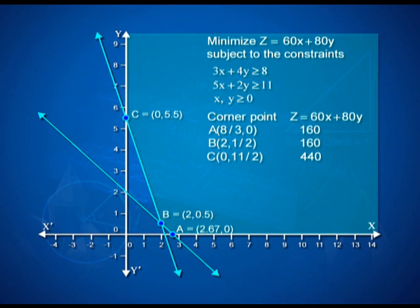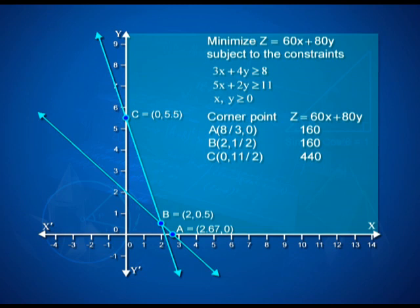The corner points are: A = (8/3, 0), B = (2, 1/2) or (2, 0.5), and C = (0, 11/2) or (0, 5.5). Evaluating the objective function at these three points, we observe that the value is 160 at both A and B. That is something interesting.